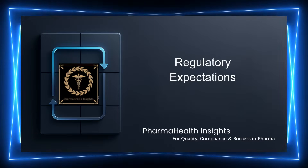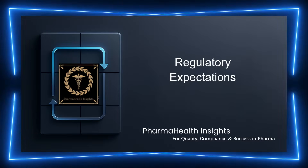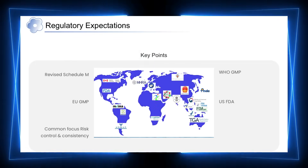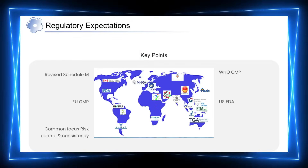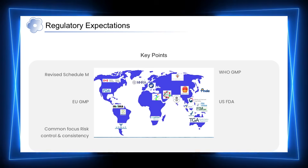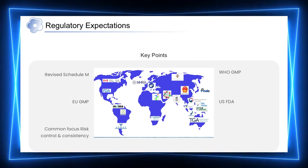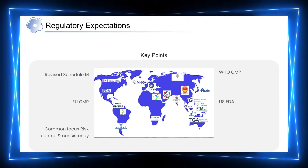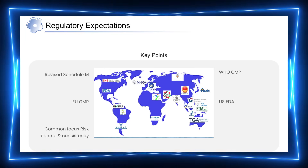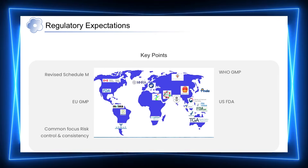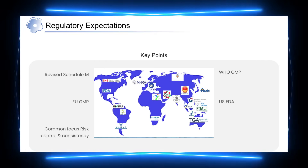So what do regulations actually expect from AHUs? Although different regulatory guidelines are followed across regions, their expectations for AHUs are largely aligned. Whether it is revised Schedule M, WHO GMP, EU GMP, or US FDA, the core focus remains the same — control, consistency, and effective risk management. Regulators expect AHUs to be designed with a clear GMP rationale, validated appropriately, and monitored on an ongoing basis. The emphasis is not on how advanced the system is, but on how reliably it can maintain controlled conditions.